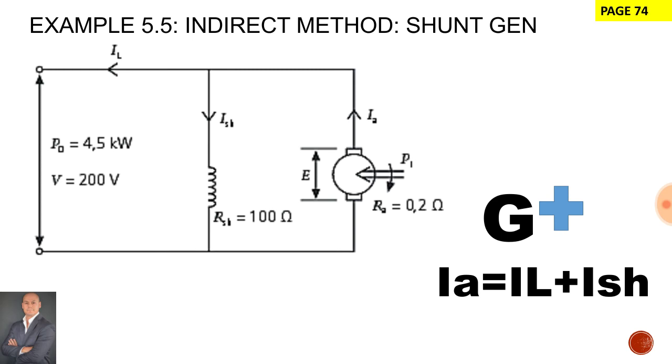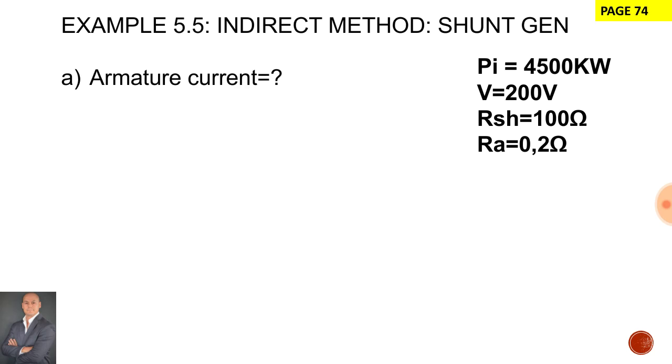So in order to calculate the armature current we say IL plus I shunt. The power given in this example is 4500 watts, the voltage is 200 volts, the shunt resistance 100 ohms, the armature resistance 0.2 ohms. Now it's important to note that no mechanical loss is given and no load current is given. So later in our calculation we will assume that the mechanical loss is equal to zero.